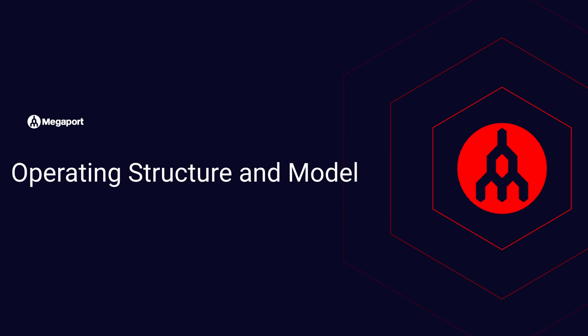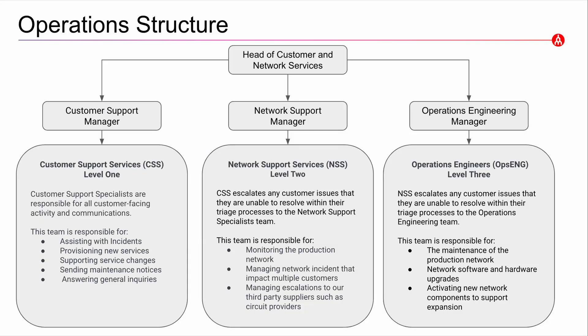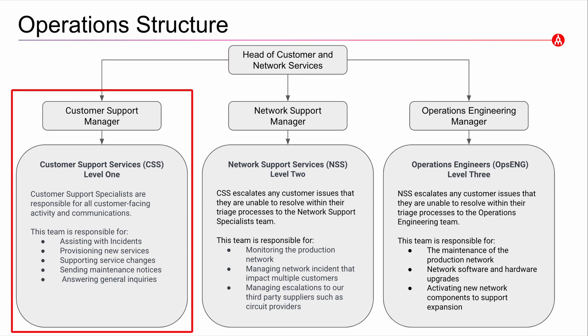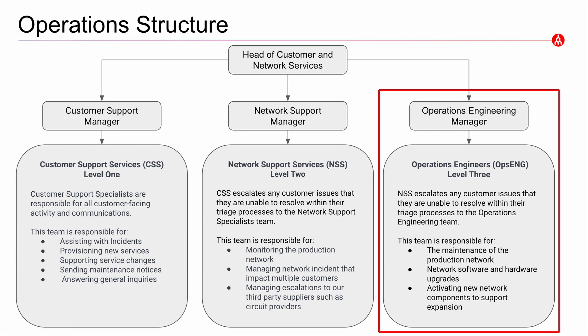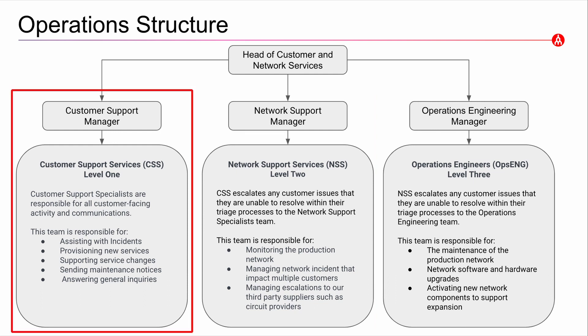Operating structure and model. There are three primary support teams that report to the head of customer and network services. These are the customer support team, the network support team, and operations engineers. The customer support team is our level one team. They are responsible for direct customer-facing support for troubleshooting, incidents, provisioning issues, and general inquiries. These are your first point of contact and the people who respond to emails, chats, and calls.